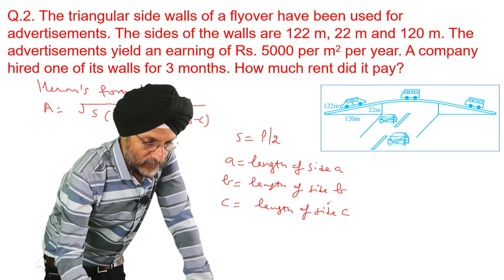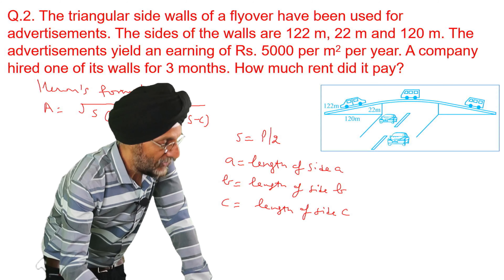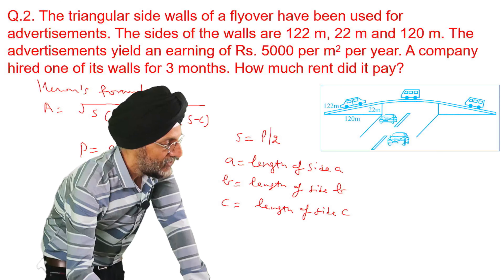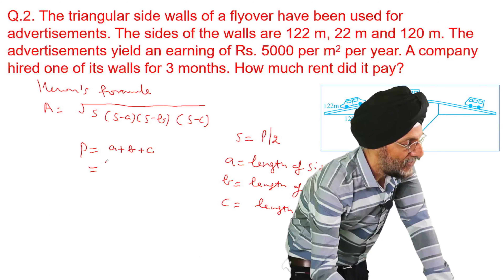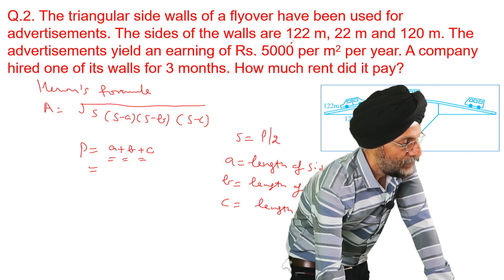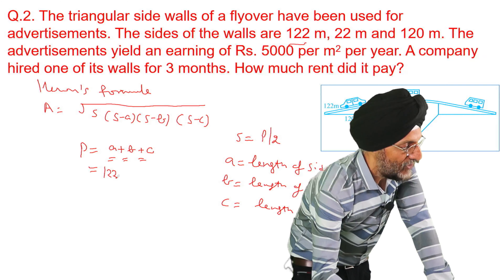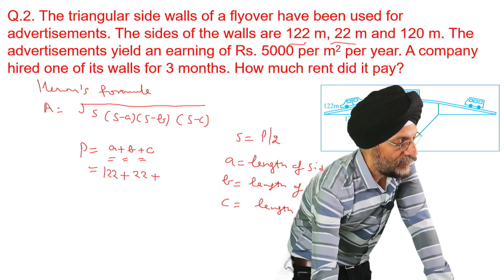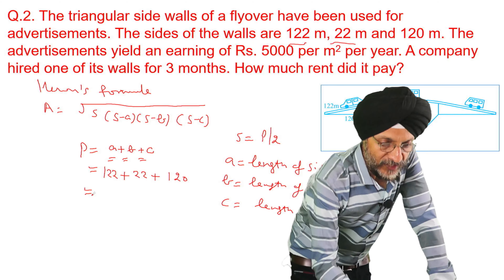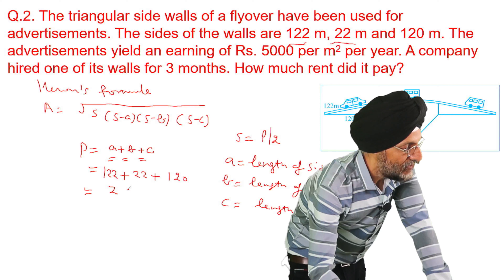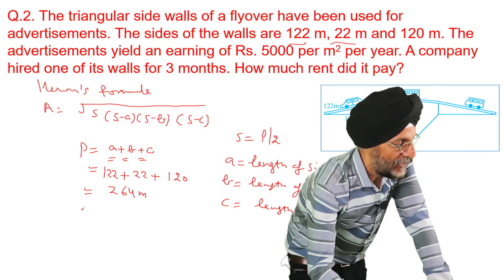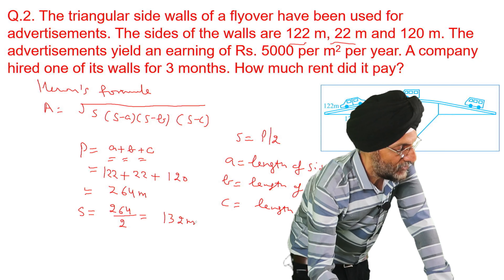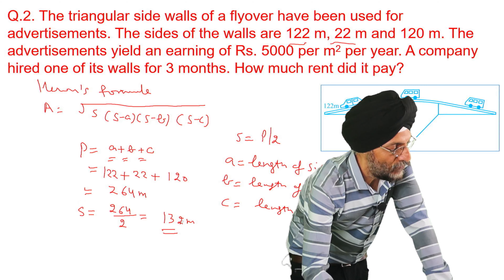Now we will use Heron's formula to calculate the semi-perimeter. The perimeter = A + B + C. Filling in the values: A = 122, B = 22, C = 120. The total of all three sides is 264 metres — this is the perimeter. The semi-perimeter S = 264 ÷ 2 = 132 metres.